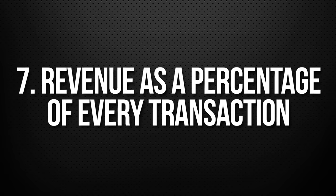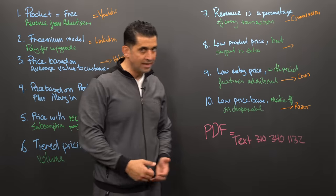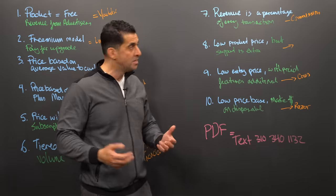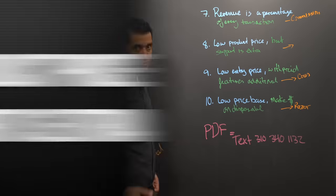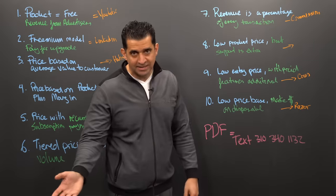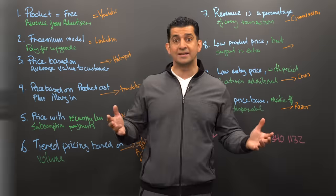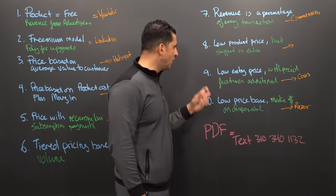Number seven is revenue as a percentage of every transaction — a commission model. The revenue comes from a commission base that they're paying out. Number eight is low product price, but support is extra. This is everywhere — the product isn't that much, but if you want the extra support, it's $99 per year or $999 and all that additional stuff they tag on.